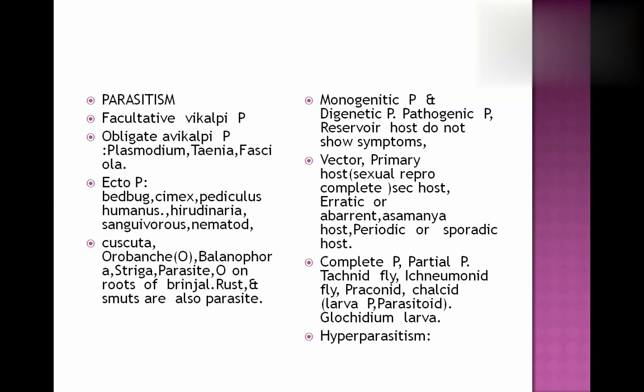Periodic or sporadic hosts are also present. Complete parasite and partial parasite. Examples are tachinid fly, ichneumon fly, braconid fly, chalcid fly — in these, larvae live as parasites, known as parasitoids.